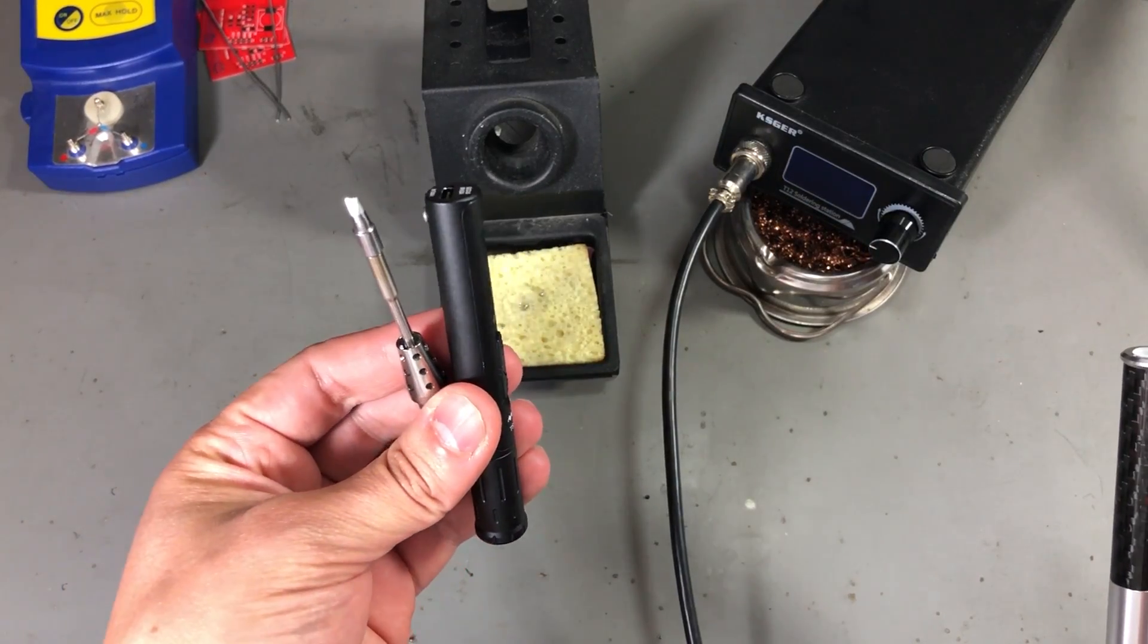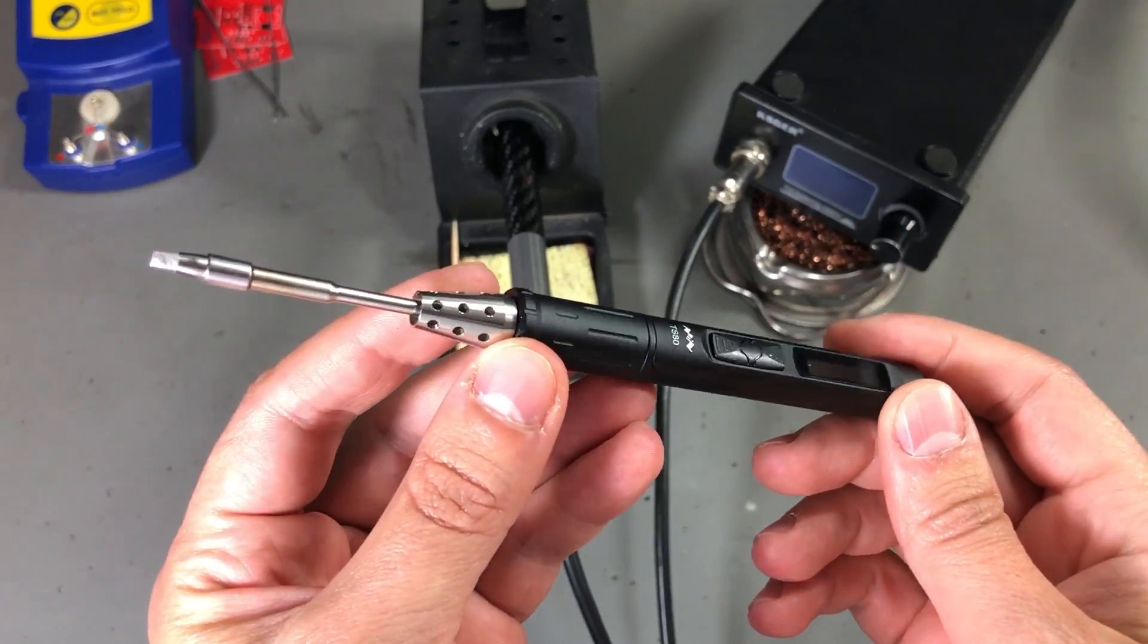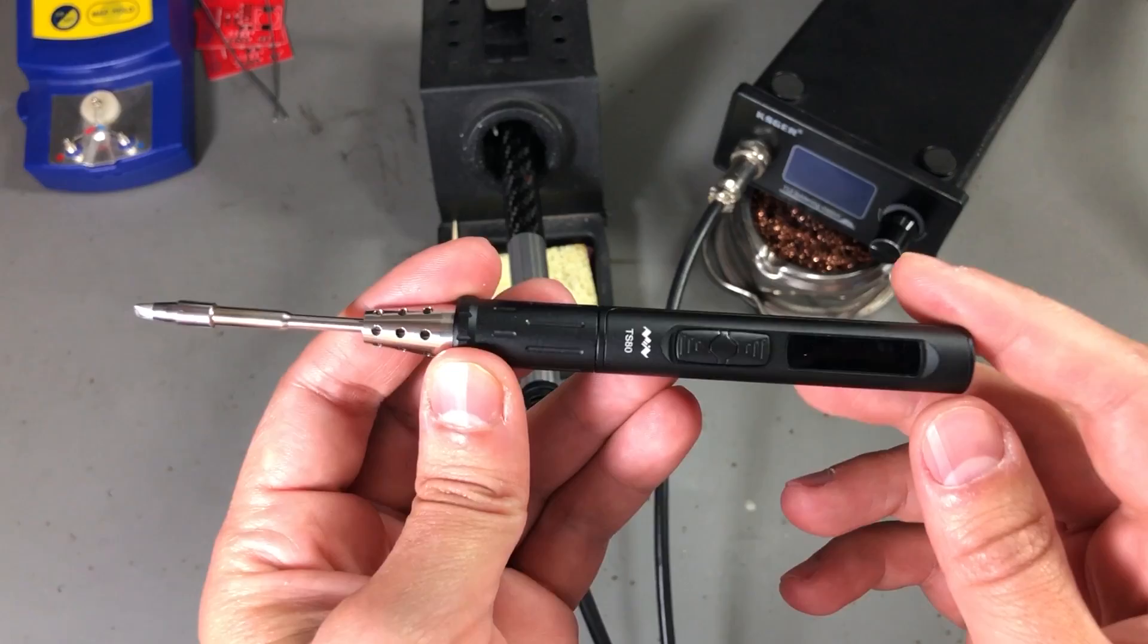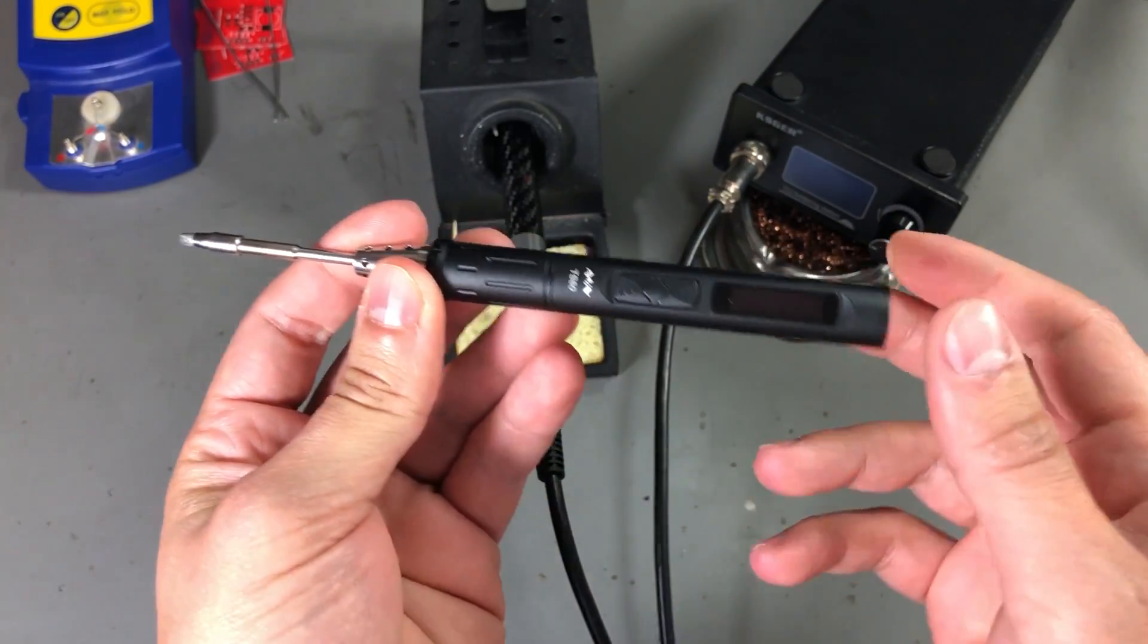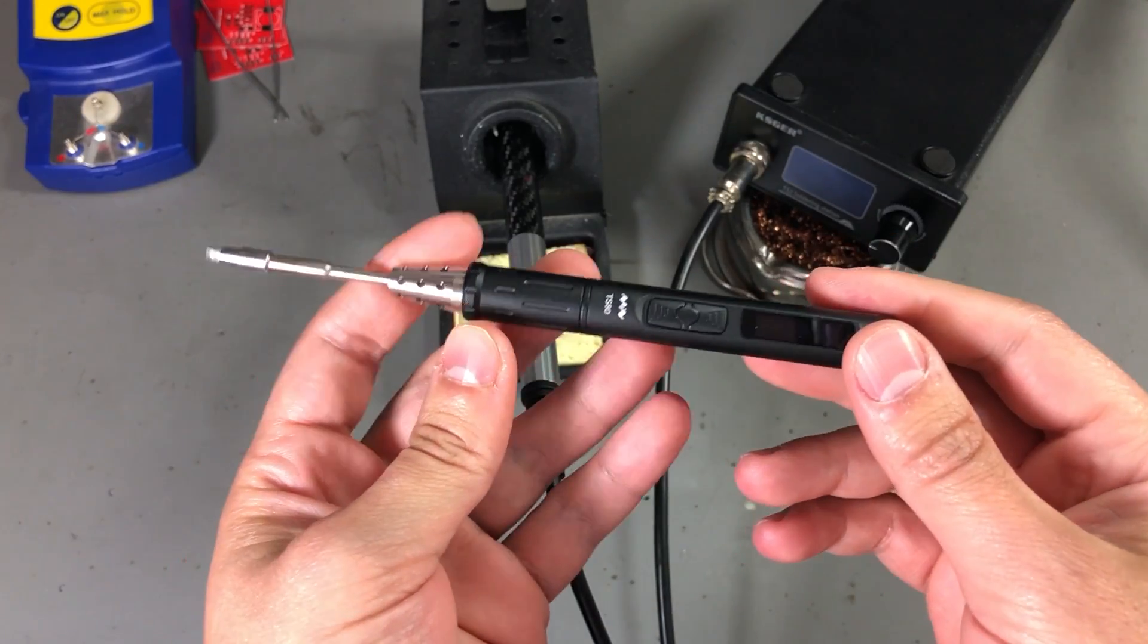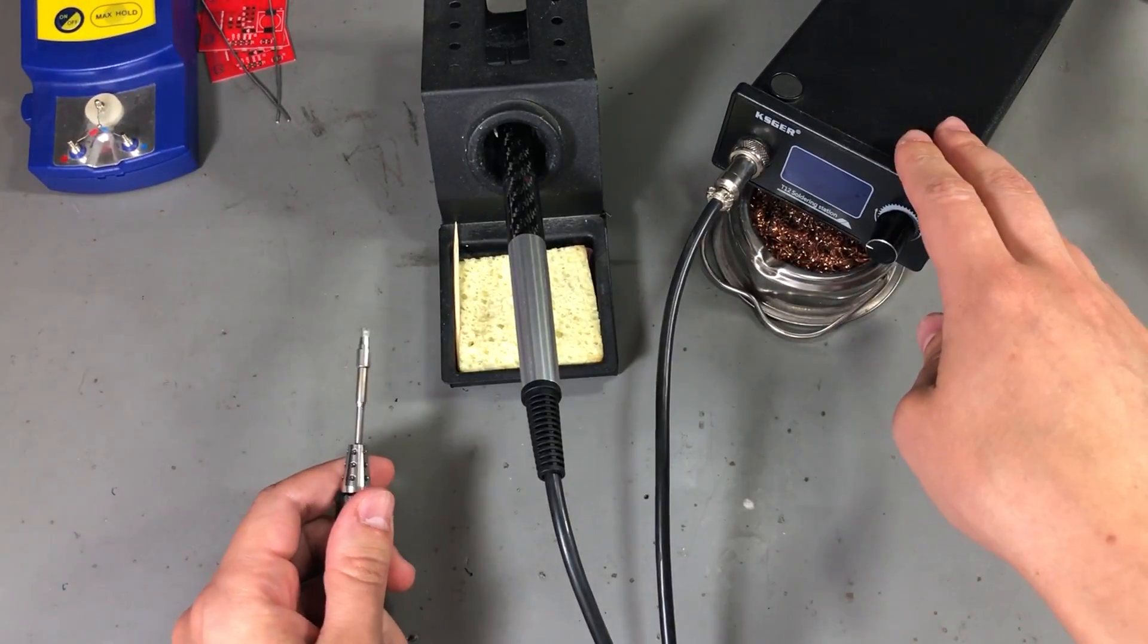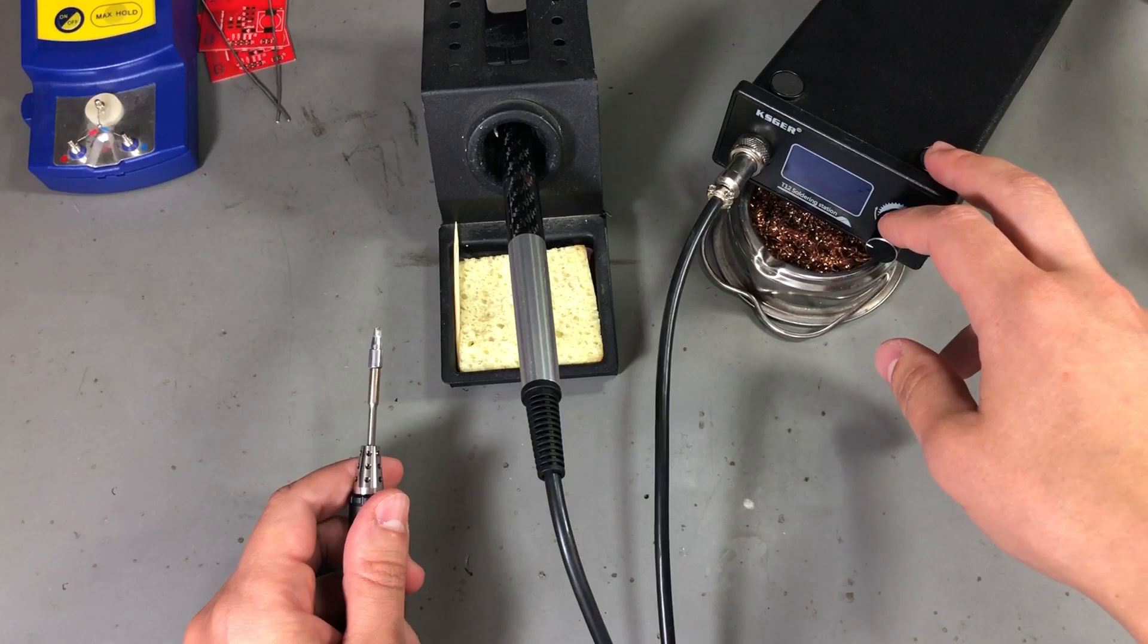Purchasing the same number of tips that I use on T12 for the TS80 is not going to be cheap. In terms of portability, the TS80 wins because it's smaller and you can have it powered from a power bank so you can be soldering in the field in no time.